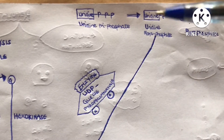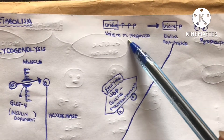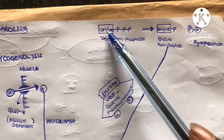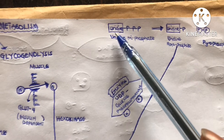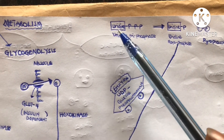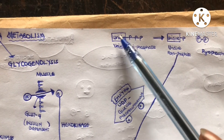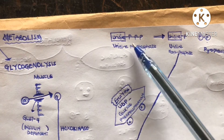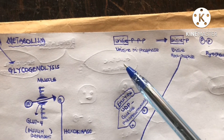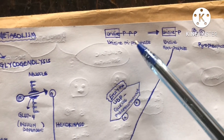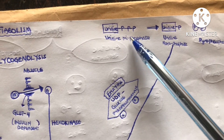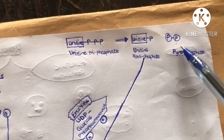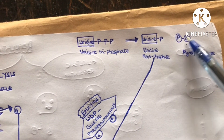Now let's look at this molecule called uridine triphosphate, or UTP. Uridine is made up of uracil and ribose. Uridine plus three phosphates gives us uridine triphosphate or UTP. This UTP is broken down into uridine monophosphate and pyrophosphate — pyrophosphate being two phosphates linked together.